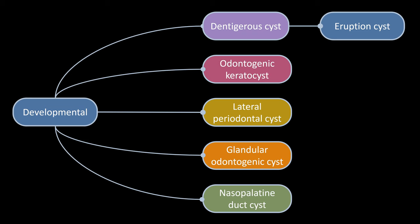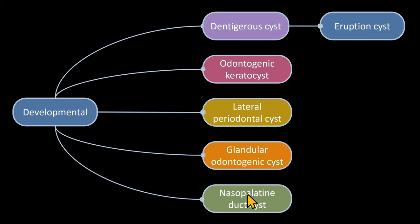Now that we have covered the inflammatory cysts of the jaws, let us continue with the developmental odontogenic cysts. We'll review the most common ones. We'll start with the dentigerous cyst; there is a soft tissue variant known as an eruption cyst which we'll skip. We'll also learn about odontogenic keratocyst, lateral periodontal cyst, and glandular odontogenic cyst. Finally we'll discuss a developmental cyst of non-odontogenic origin: the nasopalatine duct cyst.